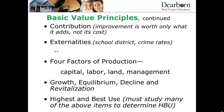Highest and best use, frequently abbreviated HBU in appraisal discussions, involves determining whether a piece of property is at its highest and best use. Value is typically determined assuming the property is at its highest and best use, or starts there and makes deductions if it's not. You have to study many of the above items to determine HBU. If it's an auto dealership in an area where dealerships are struggling, the HBU may not be to continue as a dealership — it may be to tear it down and build a home improvement center. With residential appraising, if a property is in an area of similar homes with residential zoning, you can confidently state it's at its highest and best use as a single family residence.